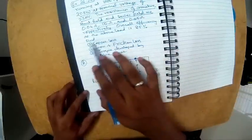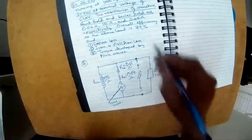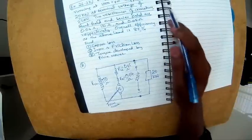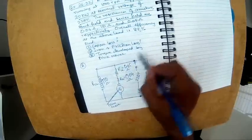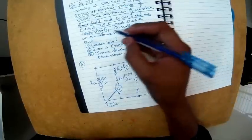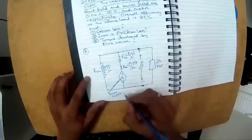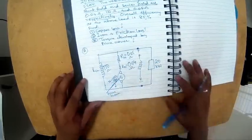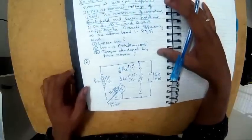The overall efficiency at the above load is 85%. Overall efficiency is output divided by input, so we can calculate the input directly from this. The speed is N = 1000 RPM. Whenever you see a problem like this, it helps to draw a circuit and represent all the information provided.